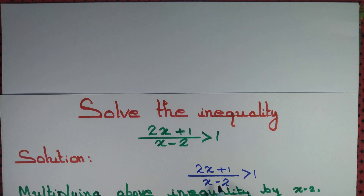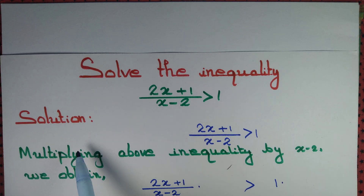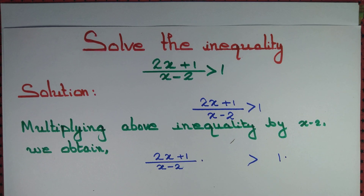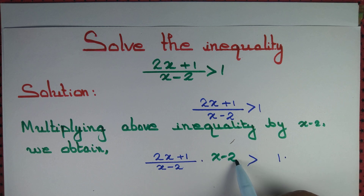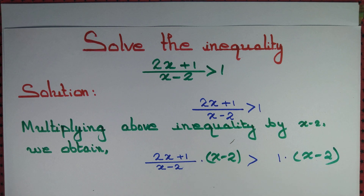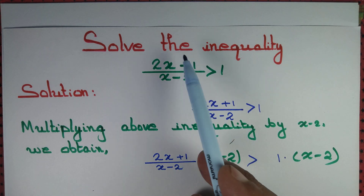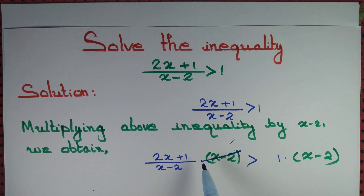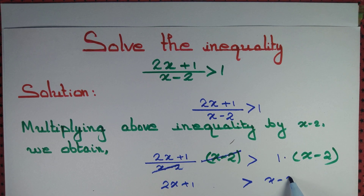If we multiply both left and right hand sides by x minus 2, we can simplify. Note that when x equals 2 this quantity remains undefined. We can cancel x minus 2 out and write 2x plus 1 is greater than x minus 2.